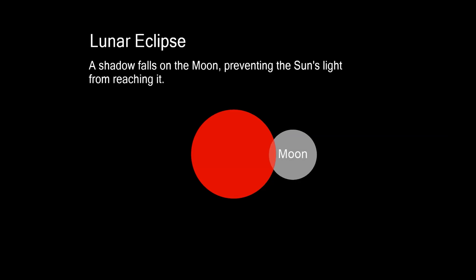A lunar eclipse, or eclipse of the moon, occurs when a shadow falls on the moon, preventing the sun's light from reaching it.